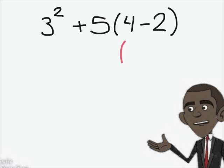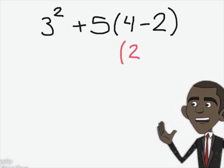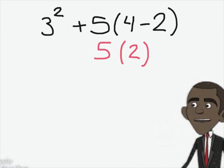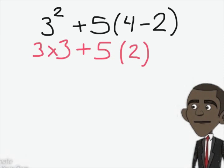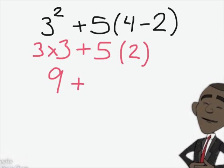So let's start with the parenthesis. 4 minus 2 is 2. Then, we have to do the exponent. 3 squared means 3 times 3 which is 9. Great, we are almost done.